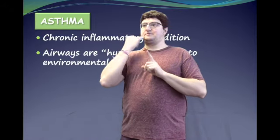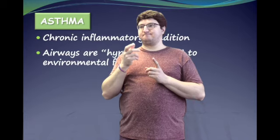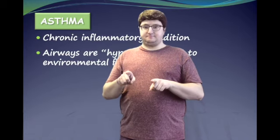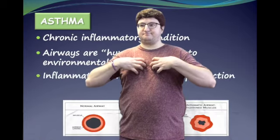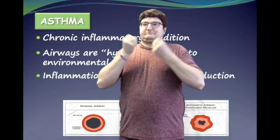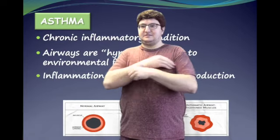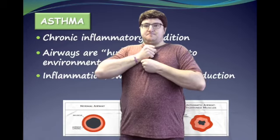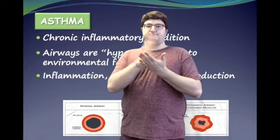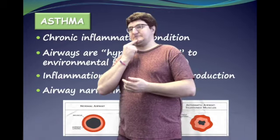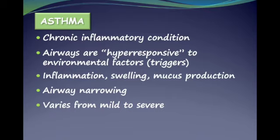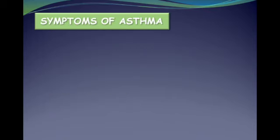Asthma is a chronic inflammatory condition where the airways are hyper-responsive to environmental factors called triggers. When the airways are exposed to triggers, inflammation, swelling, and mucus production may increase and the muscles around the airway tighten. The end result is airway narrowing. Asthma can vary from mild to severe.